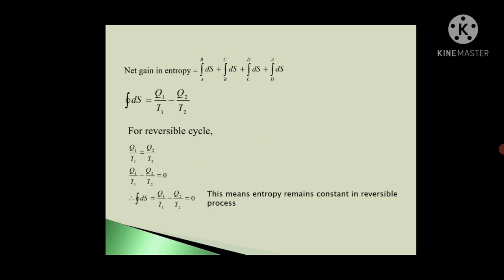Now if we have to calculate net gain in entropy, then we have to add all entropies from all the steps, four steps. So net gain in entropy is A to B integration dS plus integration B to C dS plus integration C to D dS plus integration D to A dS. So total change in entropy for this whole cycle ABCD is equal to Q1 upon T1 minus Q2 upon T2. Because from B to C and from D to A, the entropy is zero.